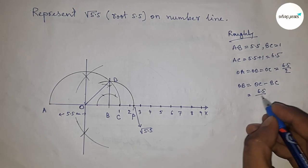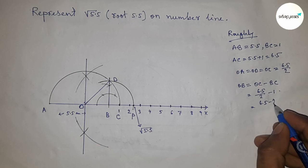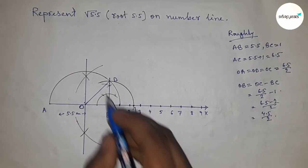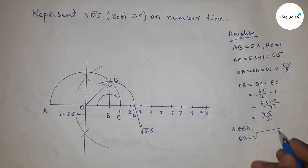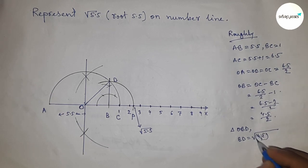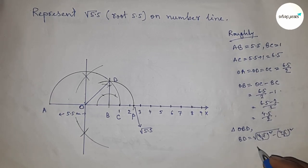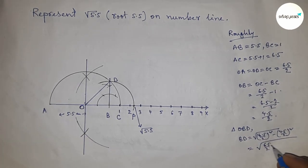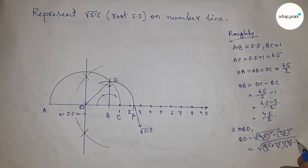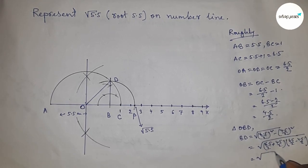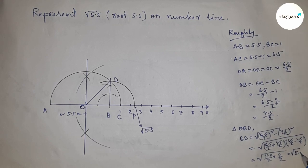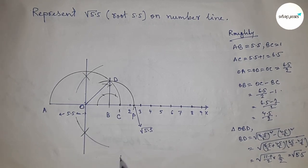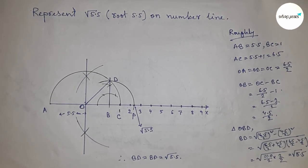OB equals OC minus BC, putting the value: OC minus BC gives 4.5 by 2. Triangle OBD is a right-angle triangle, so by Pythagoras theorem: BD squared equals hypotenuse squared minus base squared. Putting the values and applying the formula a squared minus b squared equals (a+b)(a-b), this gives 11.0 by 2 into 2 by 2, which equals 5.5. Therefore BD equals BP equals root 5.5. Thanks for watching — please subscribe, like, and comment.